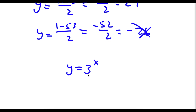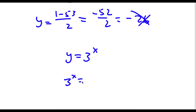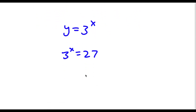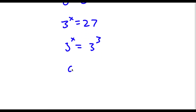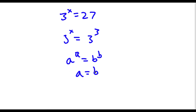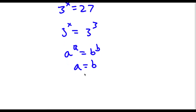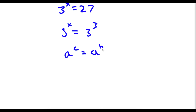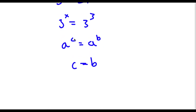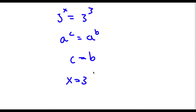Now, remember how y equals 3 to the power of x. So I have 3 to the power of x is equal to 27. Now 27 is the same thing as 3 to the power of 3. So I have 3 to the power of x is equal to 3 to the power of 3. If I have something in the form a to the power of c is equal to a to the power of b, this means that c is equal to b. So in this case, x is equal to 3. That is our answer.